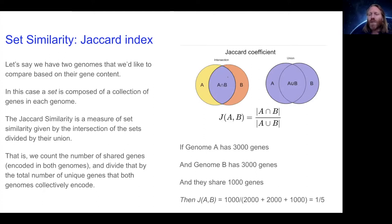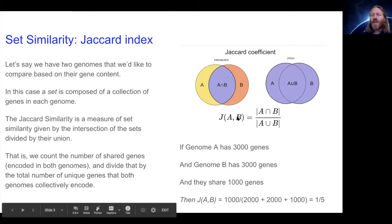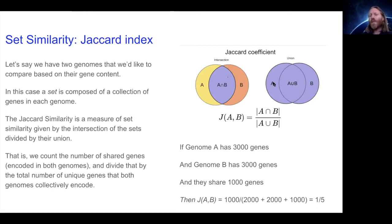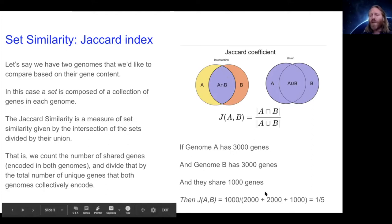If genome A has 3,000 genes and genome B also has 3,000 genes and they share 1,000 genes — that's the intersection — then we calculate the Jaccard index of genomes A and B as the intersection of 1,000 divided by the union. The union is the number of genes unique to A plus the number unique to B plus the number present in both A and B. It's important to remember that the union is not just the sum of the two genome sizes, but the set differences plus the intersection.